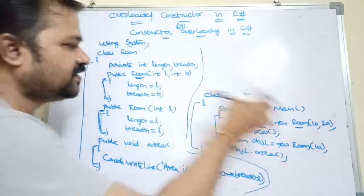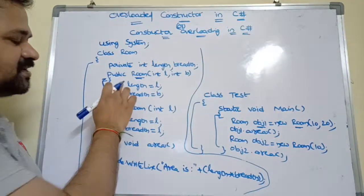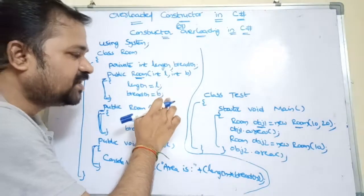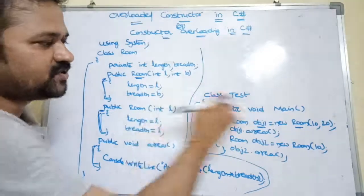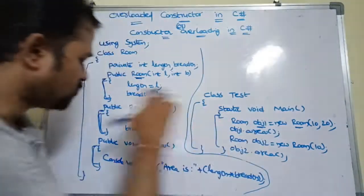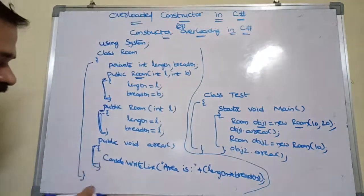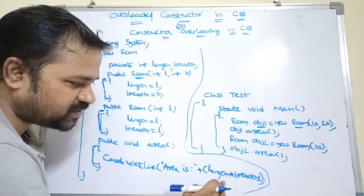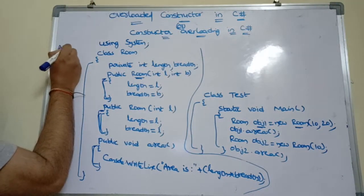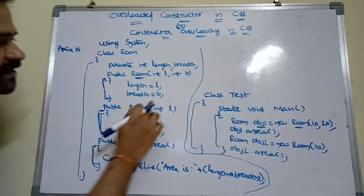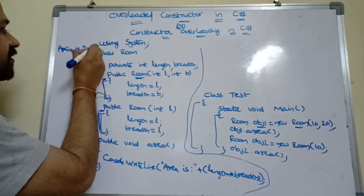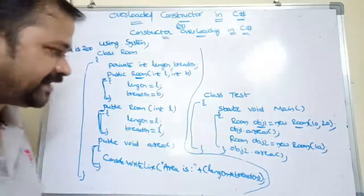So 10 will be passed to l and 20 will be passed to b. Now length value is 10 and breadth value is 20. Next, obs1.Area() is called, so control goes to the area method. Area is length into breadth — 10 into 20 — that is 200. So 200 will be printed on the monitor.